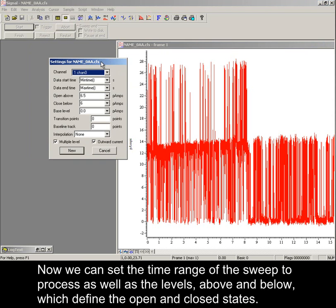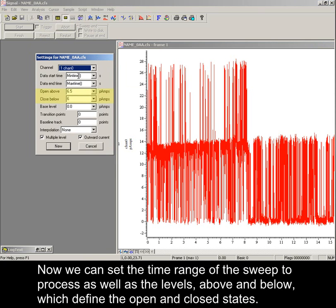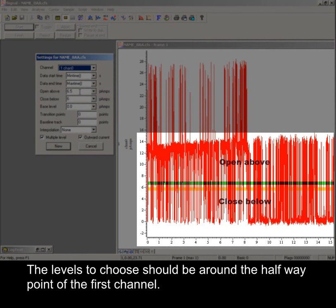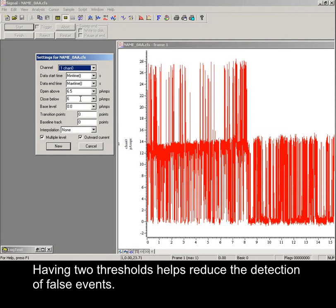Now we can set the time range of the sweep to process, as well as the levels above and below which define the open and closed states. The levels to choose should be around the halfway point of the first channel. Having two thresholds helps reduce the detection of false events.